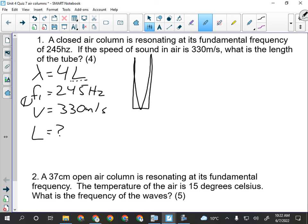So first give them a mark for their givens. The only way to get lambda is to use the universal wave equation with the other two things I was given, frequency and speed. So I would manipulate to lambda equals V over F. So give them a mark if they've got that.